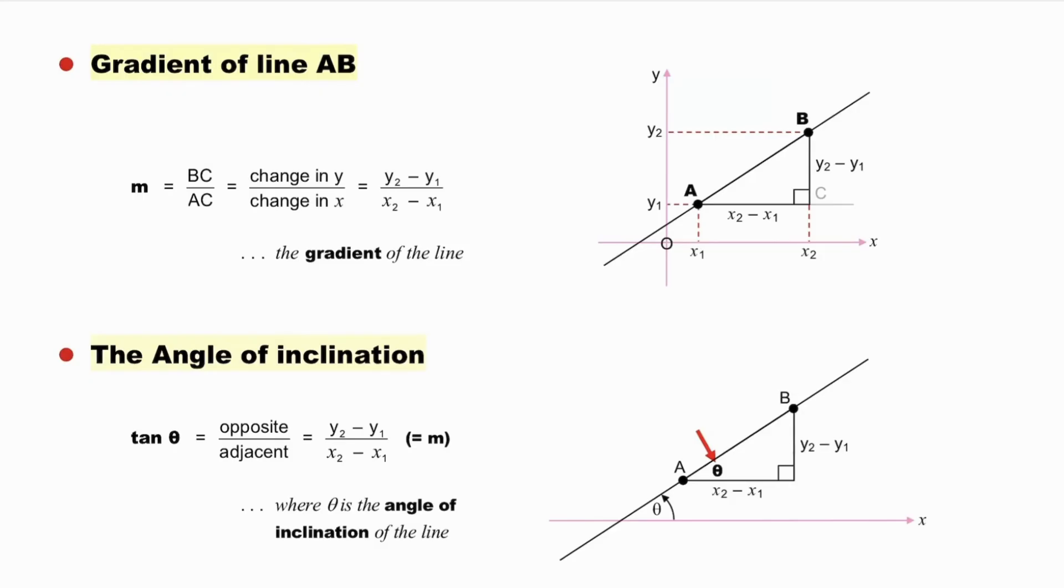Gradient plays a major role in analytical geometry, so the next formula we examine is the gradient of line AB. Using the same sketch as before, we'll consider points A and B, and the gradient is BC over AC, which is (y2 minus y1) over (x2 minus x1). Vertical over horizontal. And this is the gradient of the line.